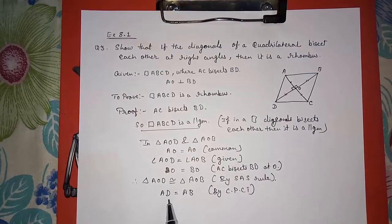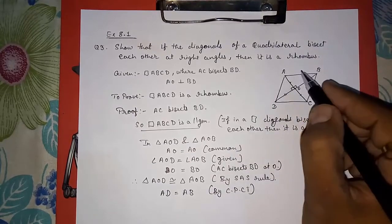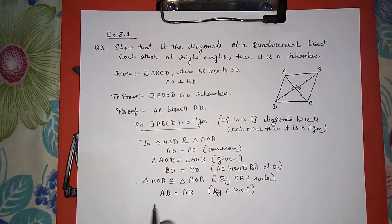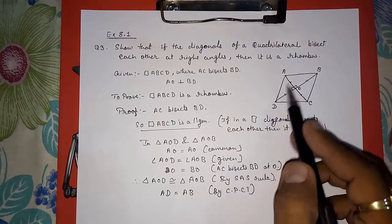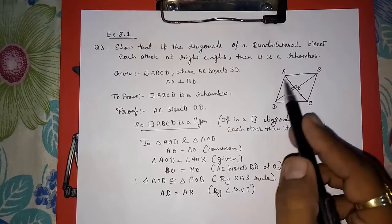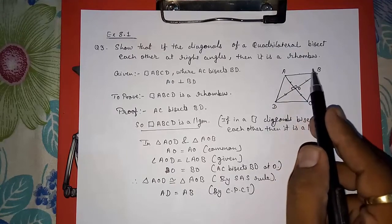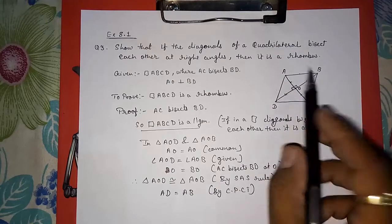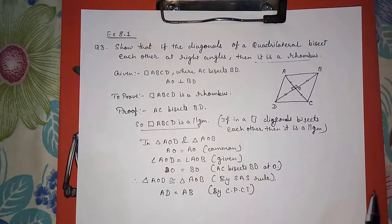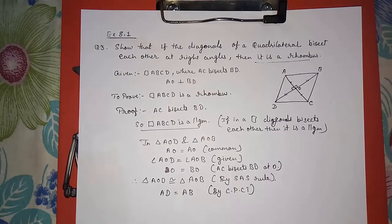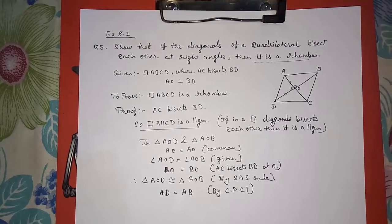We have now shown that adjacent sides are equal. In a parallelogram, if adjacent sides are equal then all sides are equal, and if all sides are equal then it is a rhombus. This is how we solve this problem. Thank you so much for watching — if you like it, please subscribe!